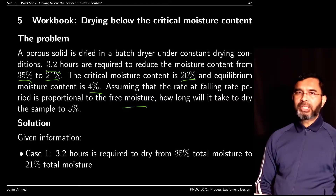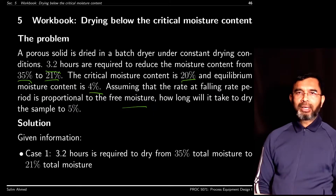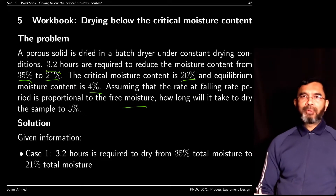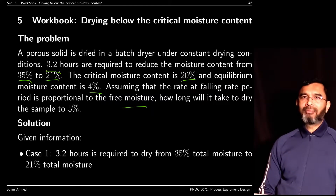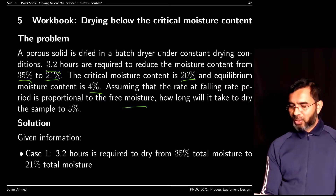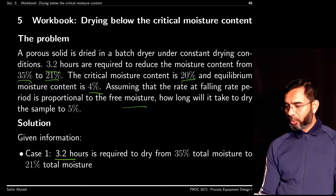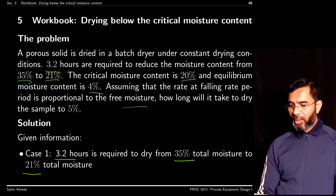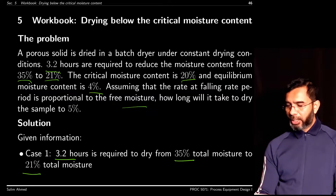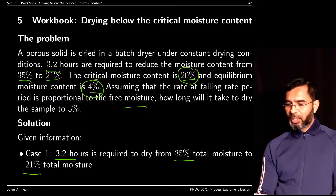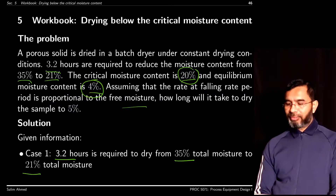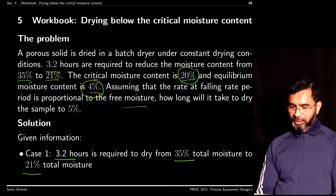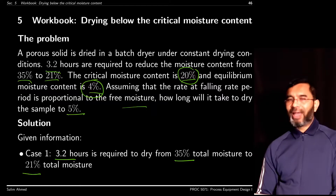The typical scenario here is that many parameters are unknown, but we have information that drying from one moisture content to another takes a given number of hours, and we need to find how long it takes to reach another final moisture content. For case A, 3.2 hours is required to dry from 35% to 21% moisture. The equilibrium moisture content is 4% and critical moisture content is 20%, so in the first case drying occurred above the critical moisture content. For the second case, you must dry to a value less than the critical moisture content.